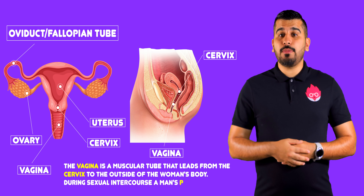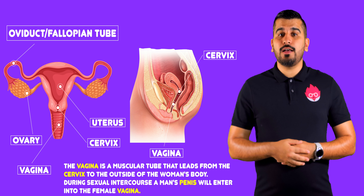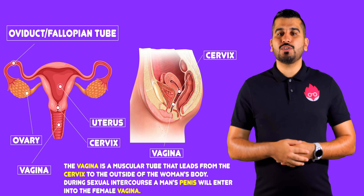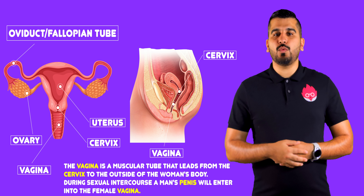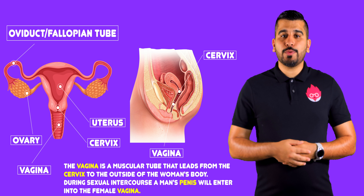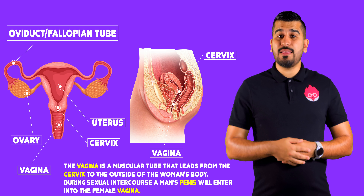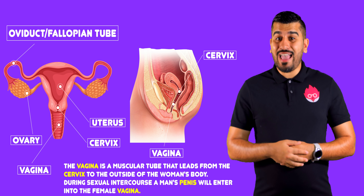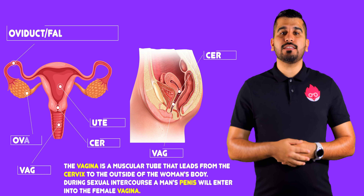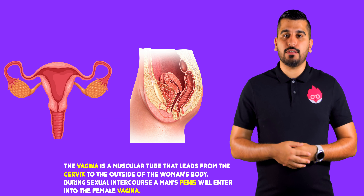The vagina is a muscular tube that leads from the cervix to the outside of the woman's body. During intercourse, the man's penis will enter into the female's vagina.